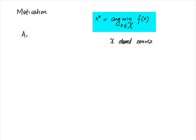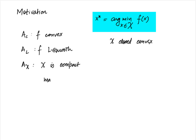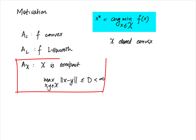We have our usual assumptions: AC is that f is convex, AL is that f is L-smooth. We will additionally make one more assumption, AX, which is that the set X is compact — meaning the maximum over x, y in X of the norm of x minus y is less than or equal to D, a finite quantity. This last assumption is new and has not been used so far, but it is needed for the class of algorithms we will describe now.